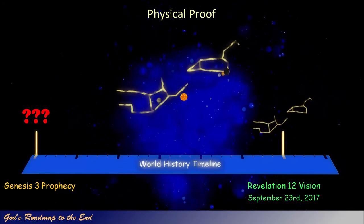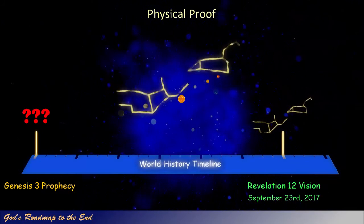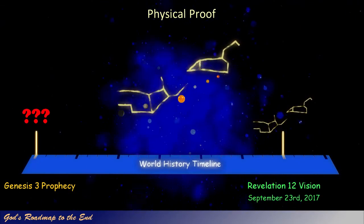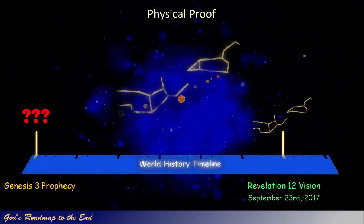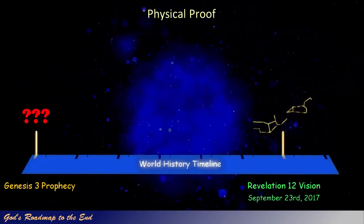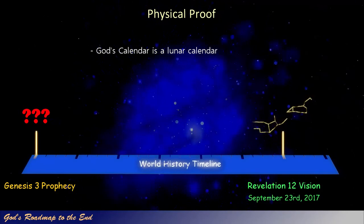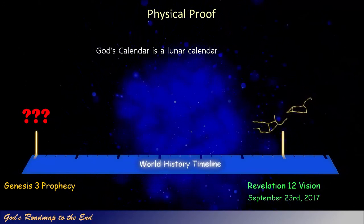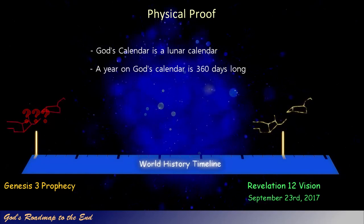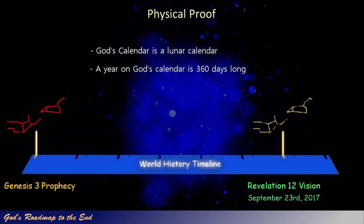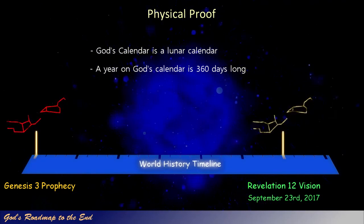Since no information is provided in the Bible between the creation of man and man falling into sin, it would be logical to conclude that the prophecy given by God in Genesis 3 must have occurred shortly after the creation narrative. When we look at time from God's perspective, we know that God uses a lunar calendar when determining years, and that a year in God's word is 360 days long. As I searched for this marker around 6,000 Biblical years ago, I was amazed to find that God did indeed mark the prophecy with the same celestial configuration as described in Revelation 12.